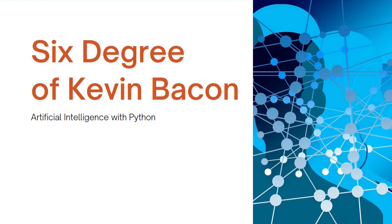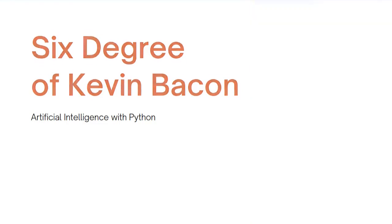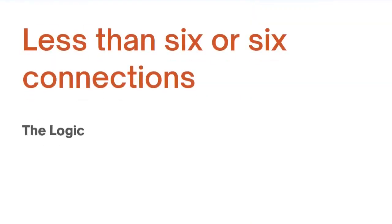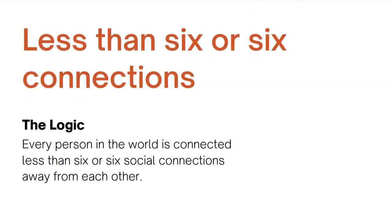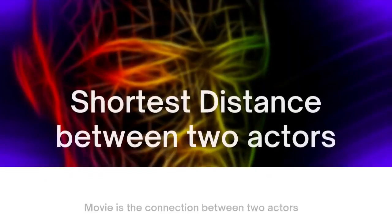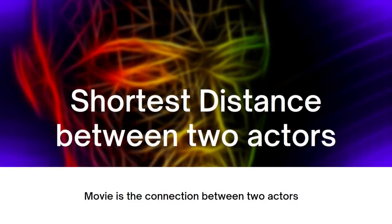The topic is Six Degrees of Kevin Bacon. The logic is that every person in the world is connected less than 6, or 6 connections away from each other. Using this logic, we will find the shortest distance between two actors, and a movie will be the connection between two actors.